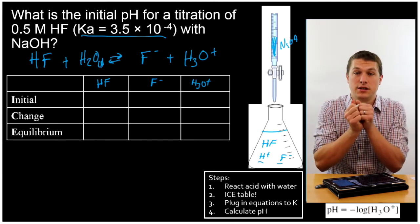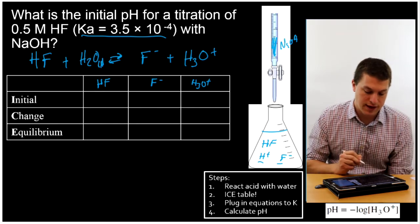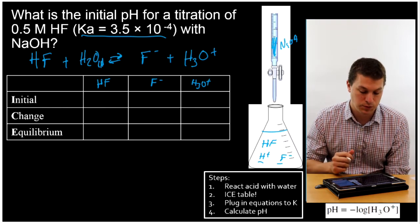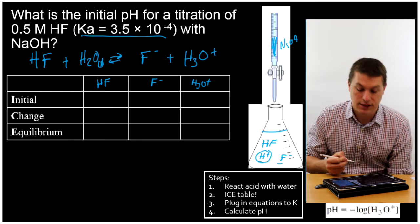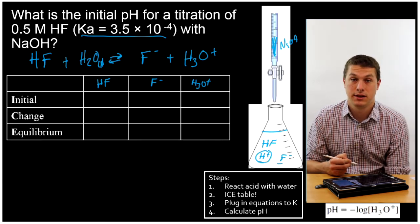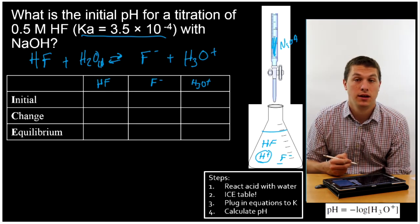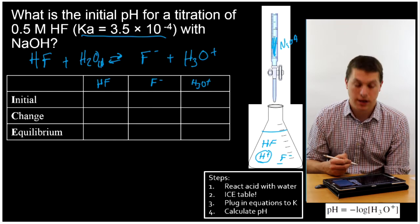And because this is a weak acid, not all of them split apart. And that's what our Ka is telling us, that only some of them split apart. So we need to find out the equilibrium concentration of this guy, of the H+, and that will actually let us calculate the hydronium ion concentration, and then the pH.